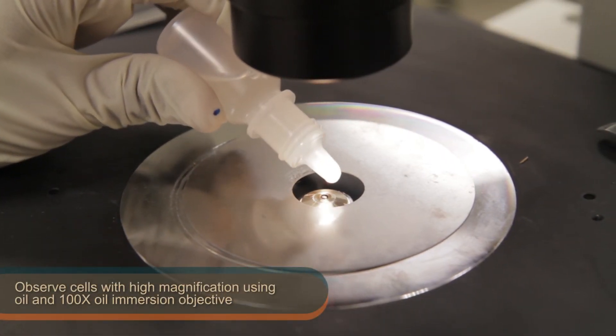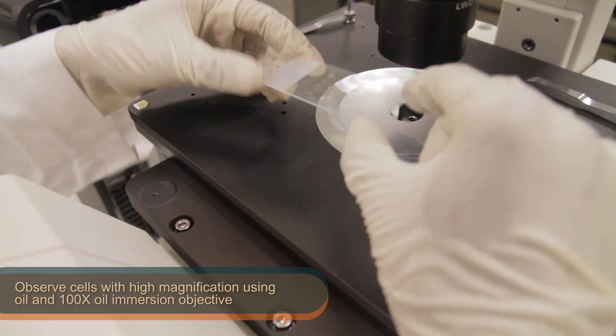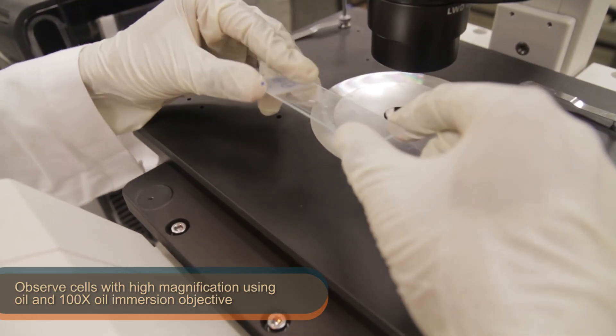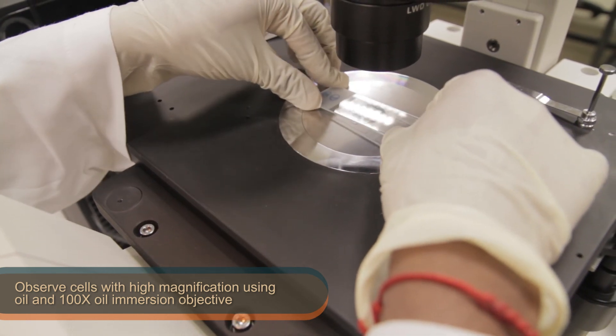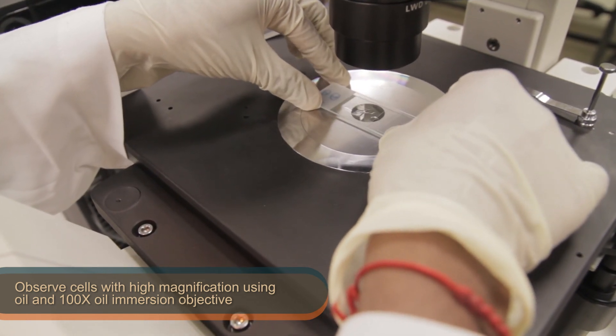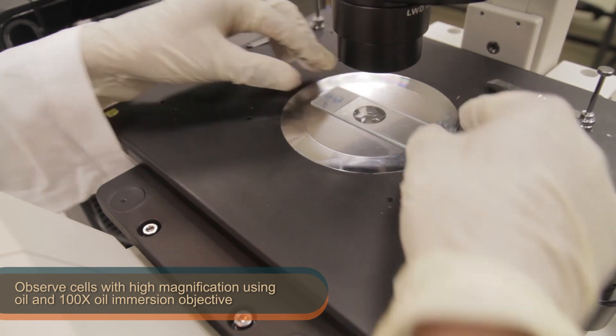Observe the cells with high magnification using oil as well as a 100x oil-immersion objective. When operating the inverted microscope, be sure to add the oil droplet to the lens instead of the glass slide.